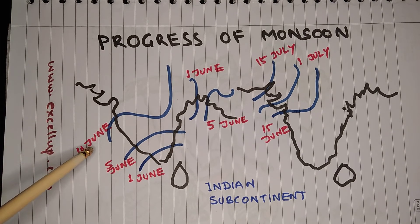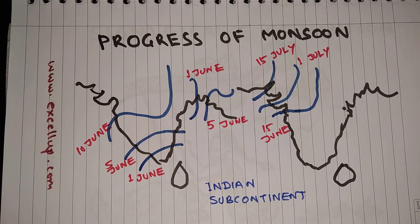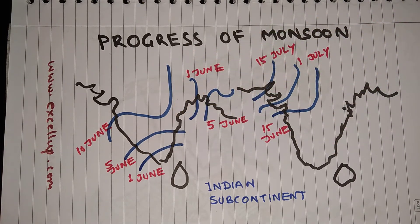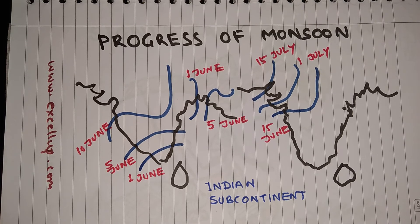One branch is called the Arabian Sea branch and another branch is called the Bay of Bengal branch. The Arabian Sea branch reaches Mumbai by the 10th of June. The Bay of Bengal branch brings rains to the northeastern states by the 5th of June, and to West Bengal and neighboring areas by the 1st of June. After that, Bihar and Eastern U.P. get rains from the Bay of Bengal branch.